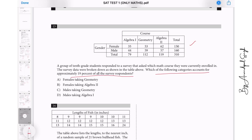Question number 13. Now this is a very big question but don't get confused. Just go through this table quickly, just have a glance on it. And then which of the following category accounts for approximately 19 percent of all the categories found? Female taking geometry. Female taking geometry are 53, 53 out of 310.